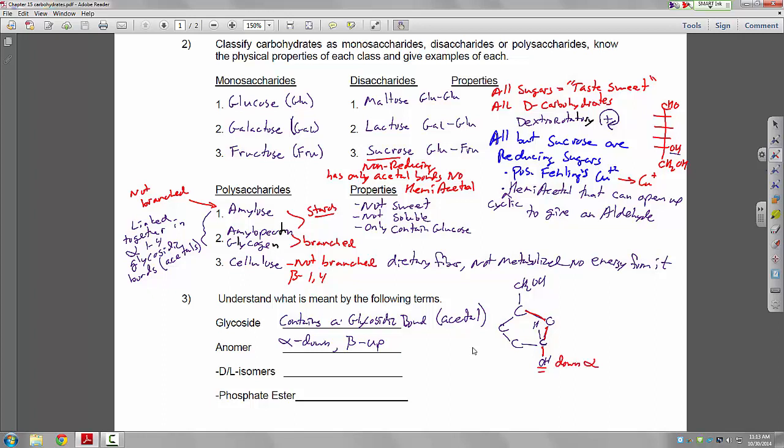I could redraw this. I could put the alcohol group on the top. The hydrogen on the bottom. And now the alcohol group is on the top side. So it's beta. So we have alpha, beta anomers.